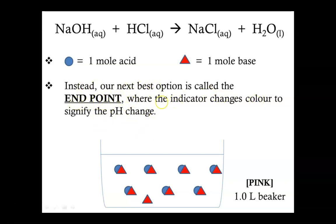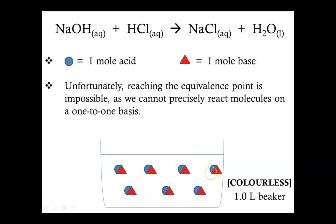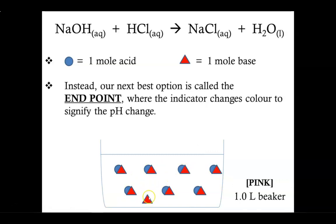The end point is where the indicator changes color to signify a pH change. Just like in our marble example, I can't just stop at marble number six — I have to throw in the seventh marble. I have to overshoot the number of holes in order to indicate that every hole has been filled with a marble. Similarly, I can't just stop at the equivalence point; I have to overshoot it a little, adding extra base to cause my indicator to change pink. That's why during a titration we always ask you to stop once you've reached a very, very faint permanent pink color.